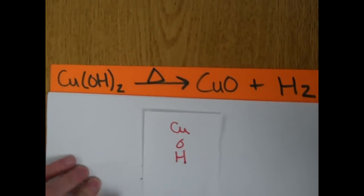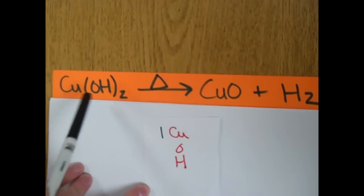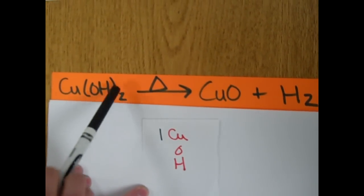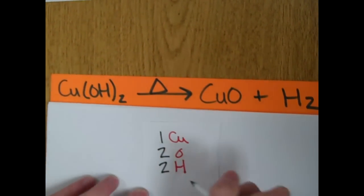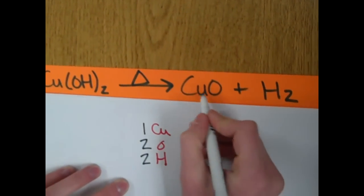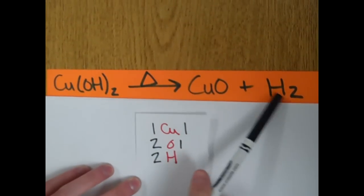So, on the left side, there's one copper, and then two oxygens because of the two outside the parentheses, and two hydrogens. And then on the right side, there's one copper there, one oxygen, and two hydrogens.